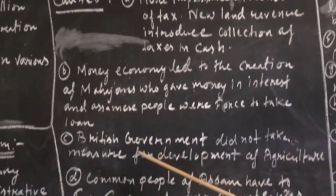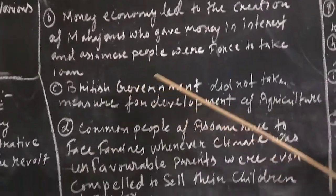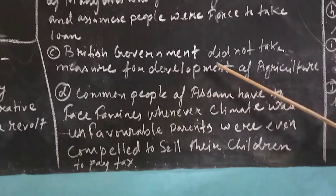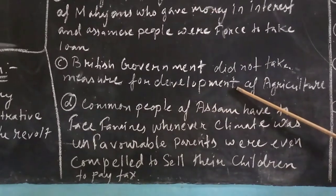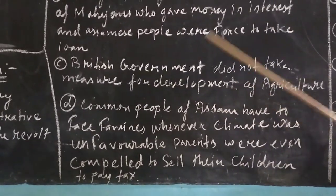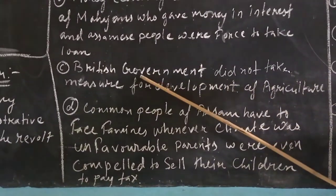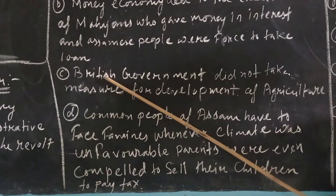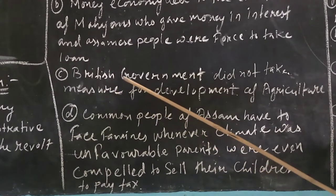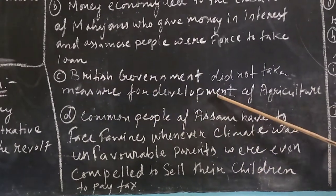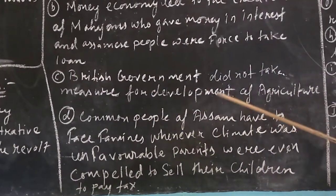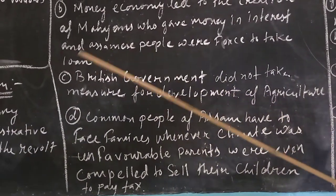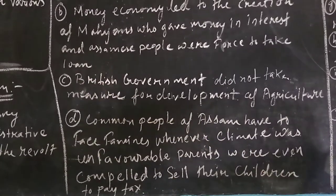The third reason: the British government did not take any measures for the development of agriculture. They only gave importance to the collection of tax but did not give importance to developing agriculture. This was one of the reasons for the anti-British uprising.